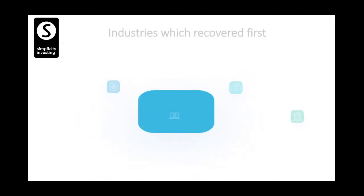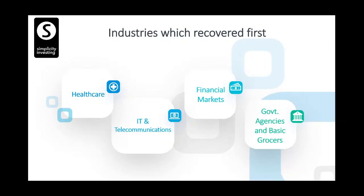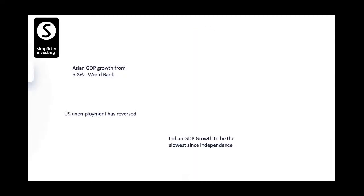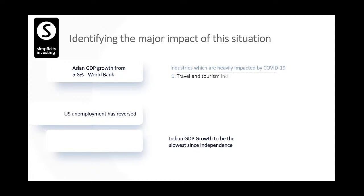Industries that recovered first: healthcare and pharma recovered first, going up 25-30% in the last one and a half months. Telecommunications and financial markets recovered because they were operational. Other parts of the economy — manufacturing, capital goods — have not yet recovered but are in the process now as the economy opens up. The food and basic grocery industry — Nestle, Avenue Supermart — also recovered first. The recovery will now spread to other parts of the economy.